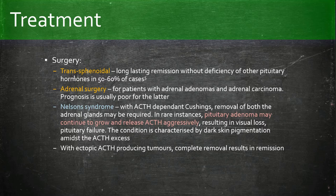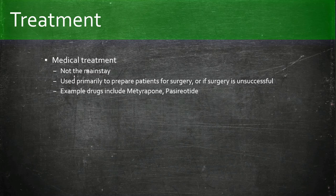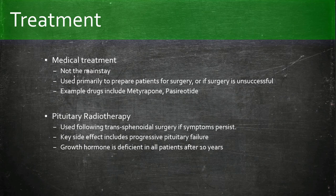If Cushing's syndrome is caused by ACTH-dependent neuroendocrine tumors, removal of these tumors results in remission. Medical treatment is mainly used to prepare patients for surgery or if surgery is unsuccessful; examples include metyrapone. Pituitary radiotherapy can also be used following transsphenoidal surgery if symptoms persist, though the key side effect is progressive pituitary failure, and growth hormone is deficient in all patients after 10 years.